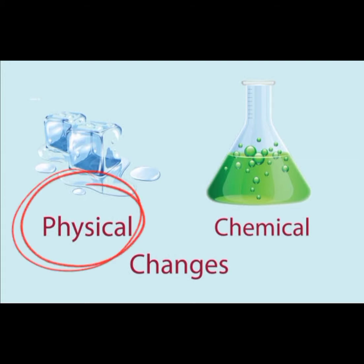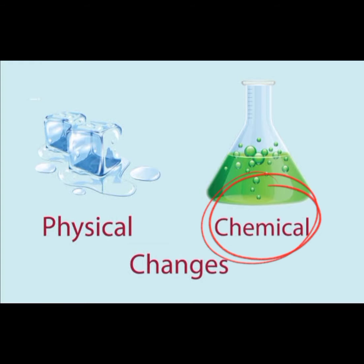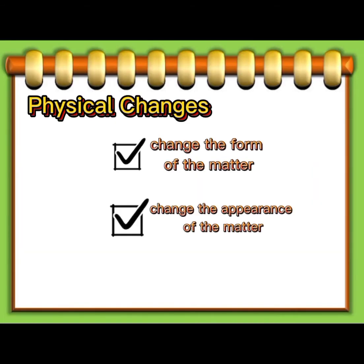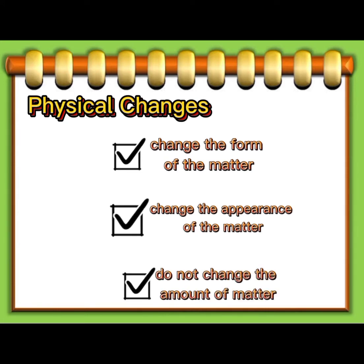Physical change and chemical change. Physical changes are the changes that change the form or the physical appearance of matter, and do not change the amount of matter in an object.